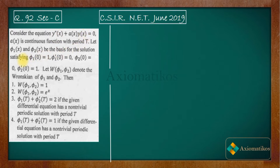Let φ₁(x) and φ₂(x) be the basis for the solution satisfying: φ₁(0) = 1, φ₁'(0) = 0, φ₂(0) = 0, and φ₂'(0) = 1. Let W(φ₁, φ₂) denote the Wronskian of φ₁ and φ₂. The first two options talk about the Wronskian of the given functions φ₁ and φ₂.